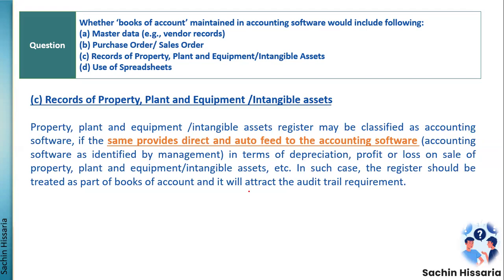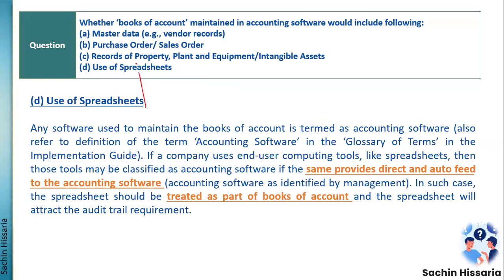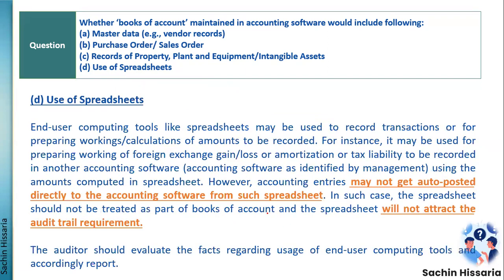The same assessment applies for spreadsheets. If you are using an Excel sheet that provides a direct and automated feed to accounting software, it will be treated as books of account and audit trail must be enabled. If it is not providing a direct feed, the audit trail requirement would not be applicable. Auditors need to exercise judgment based on circumstances for each application.